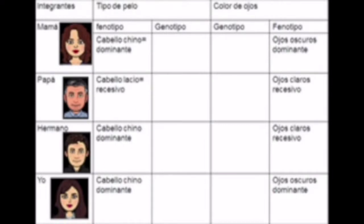En la primera columna del cuadro podemos observar que están los integrantes de mi familia. En la segunda columna están las características fenotípicas de cada individuo respecto al tipo de cabello. En la tercera columna se deja en blanco porque necesitamos el cuadro de Punnett para completarlo, al igual que la cuarta columna, ya que son las características genotípicas.